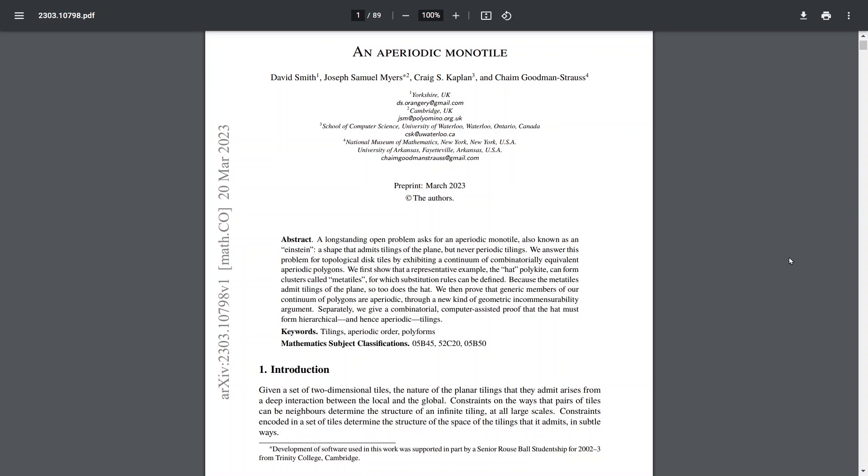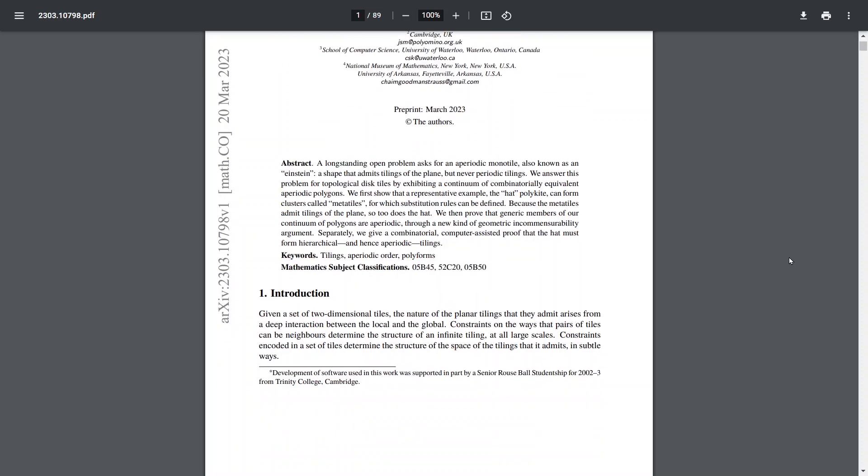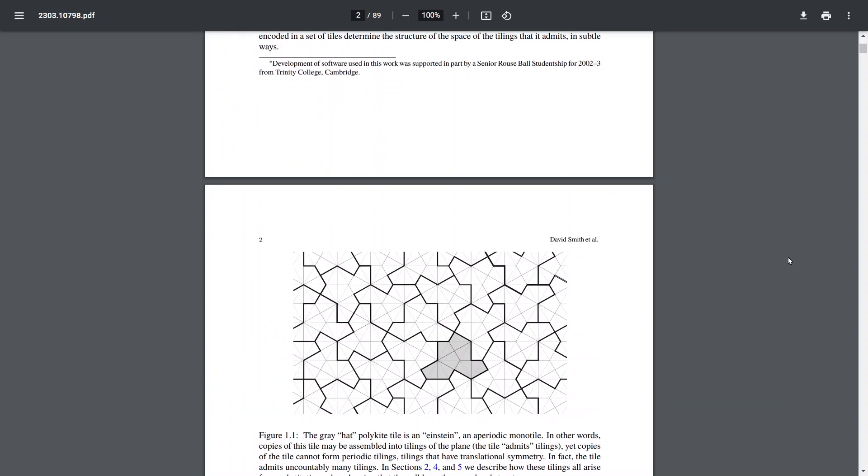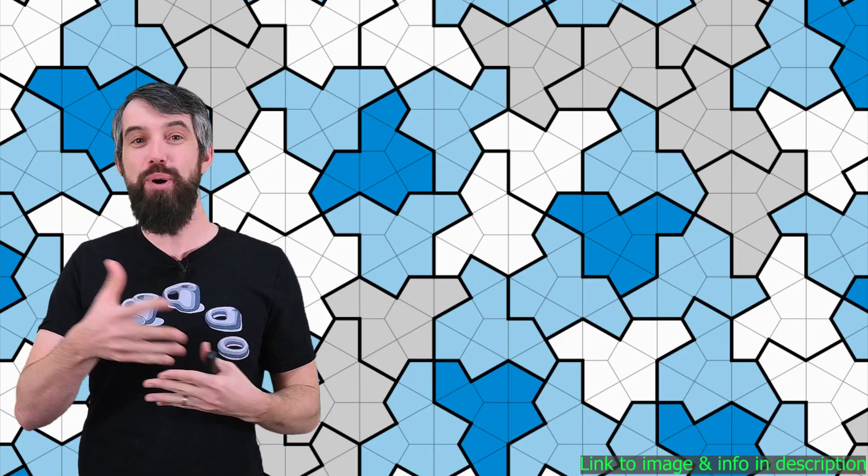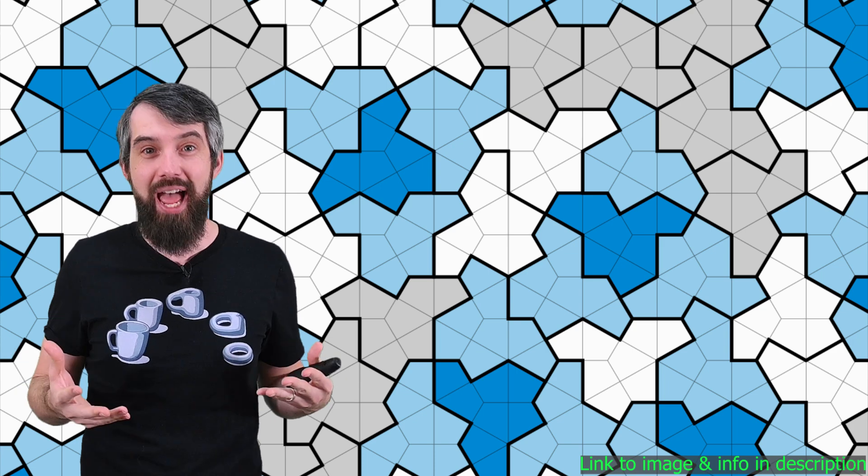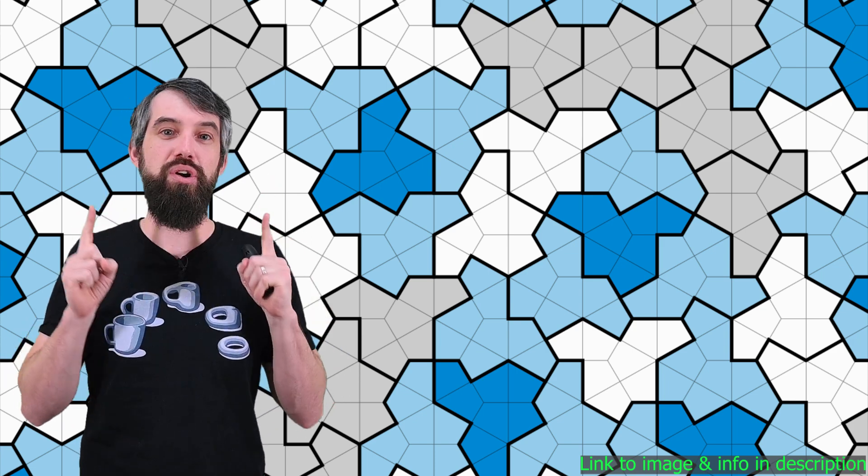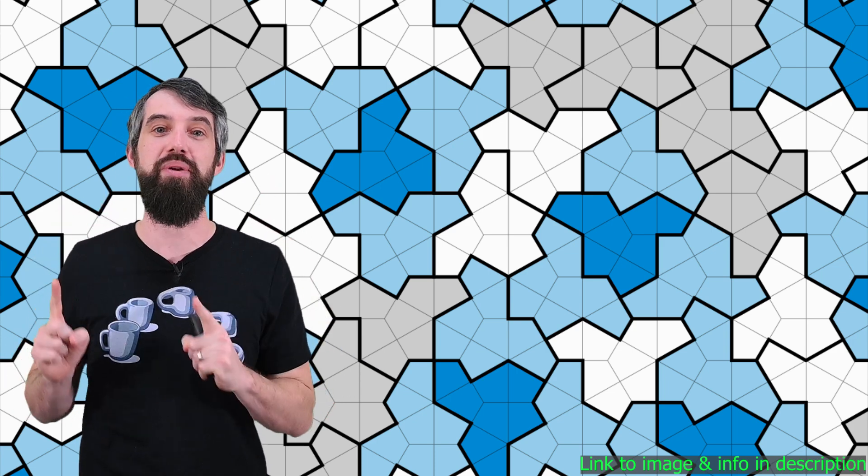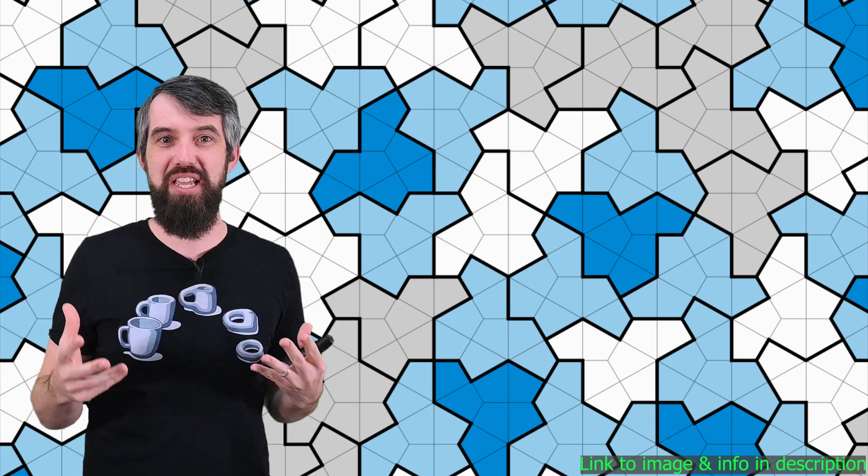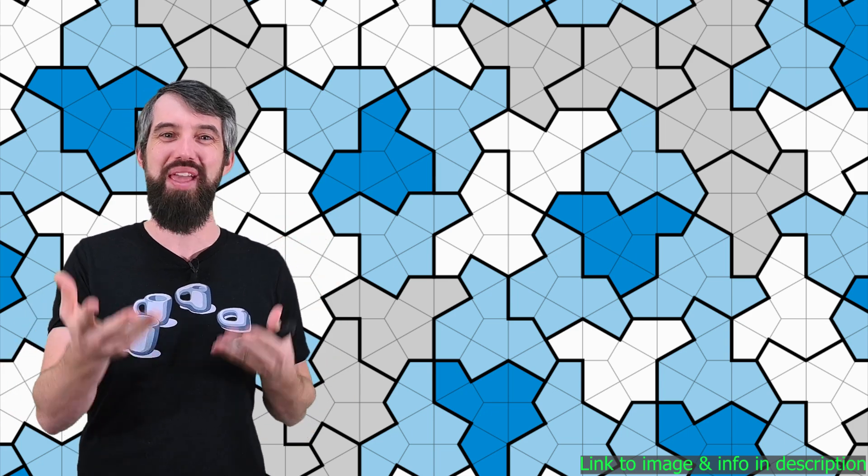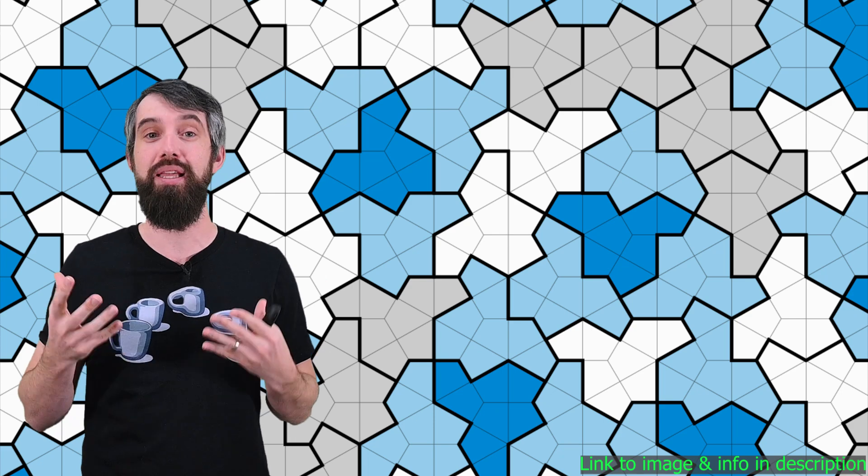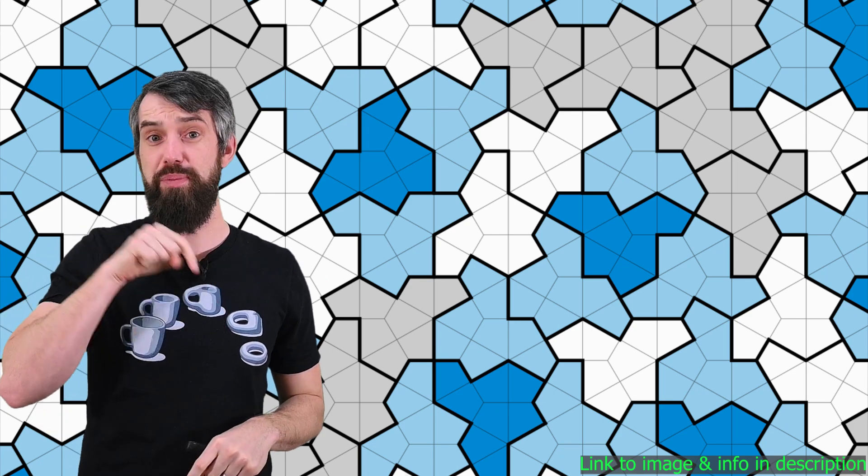And what has just been released in the new paper is a bizarre shape called the hat, which is an aperiodic monotile. That is, you can put these shapes together so it does tile the plane, but it is never going to repeat. There's never a periodicity to it. And the recency of this result just shows how cool the idea of tiling a plane really can be. I will put a link down in the description to that.